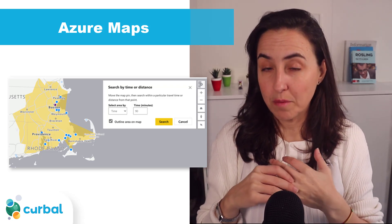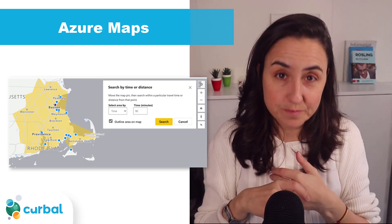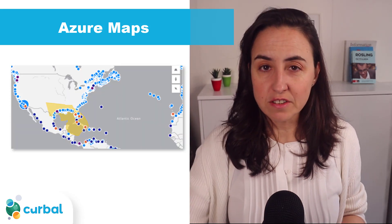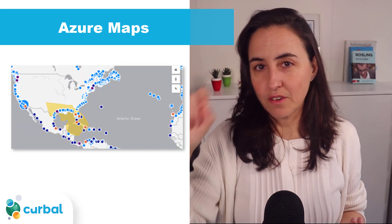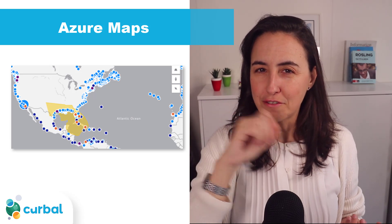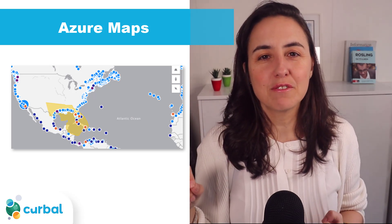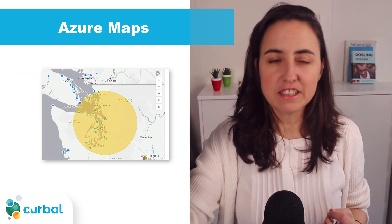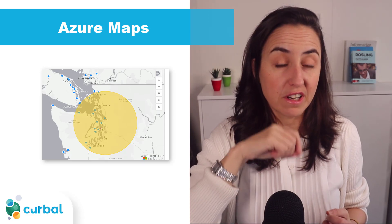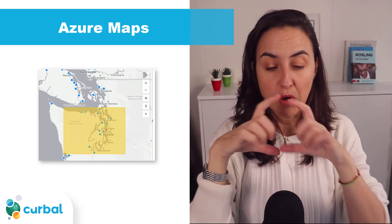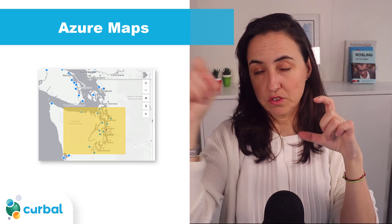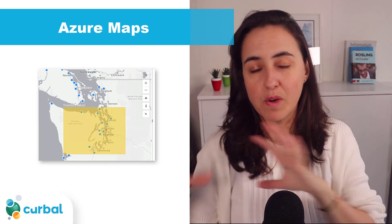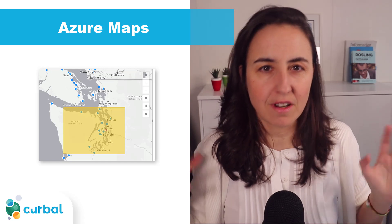You will also be able to do a polygon selection — a free-form selection. You'll be able to do a circle selection, which they call radial selection, and also a box or square selection, so you can draw a square and pick points that way.